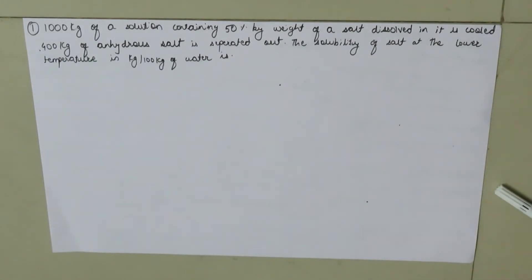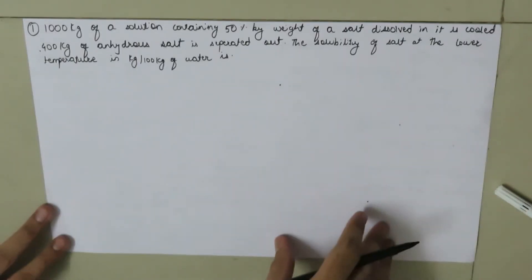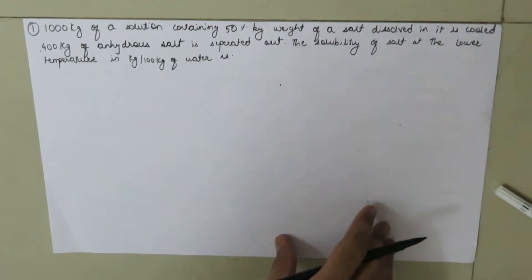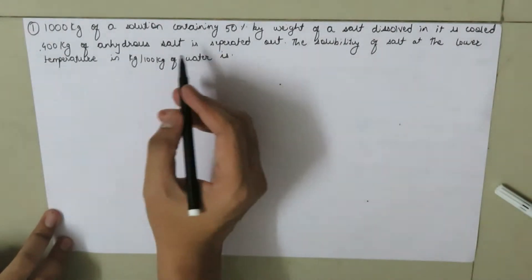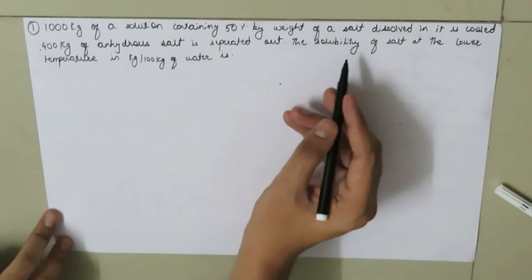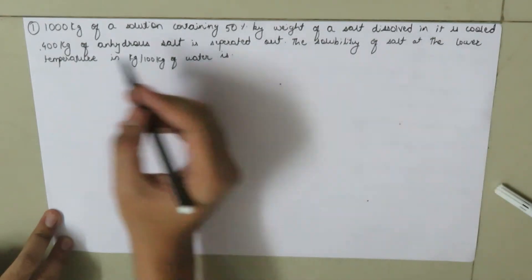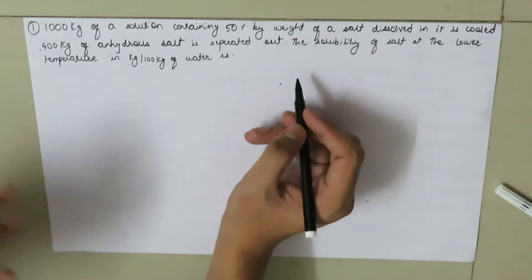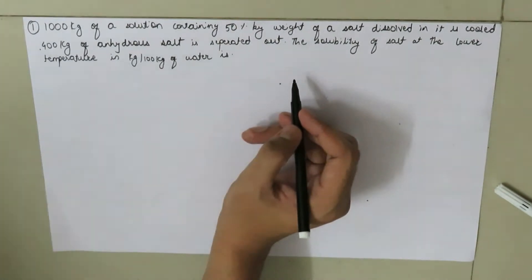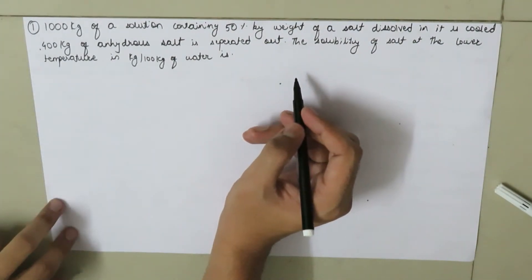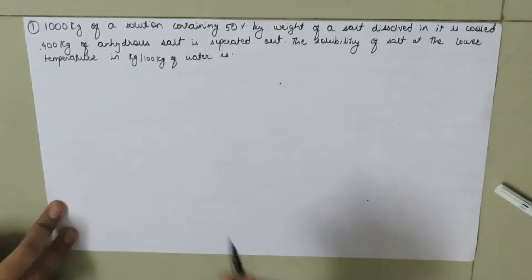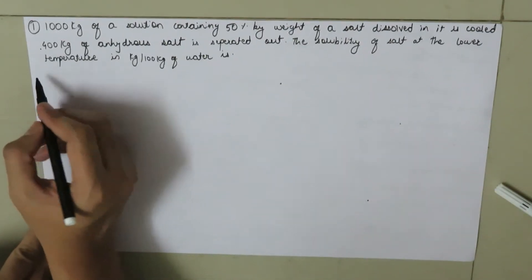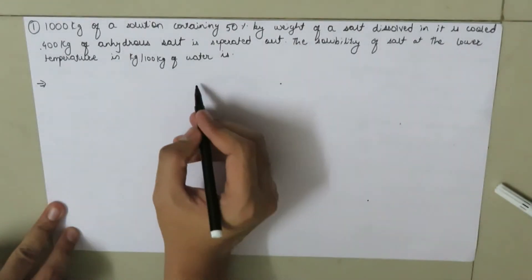Hi, and today we are going to work out a simple problem based on the concept of crystallization. Here we have our question: 1000 kg of a solution containing 50% by weight of a salt dissolved in it is cooled, and 400 kg of anhydrous salt is separated out. The solubility of this salt at the lower temperature in kg per 100 kg of water is—so to deal with such types of problems, here